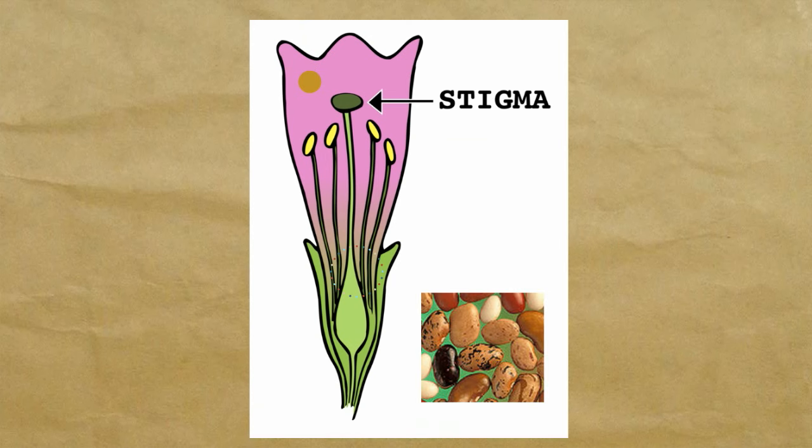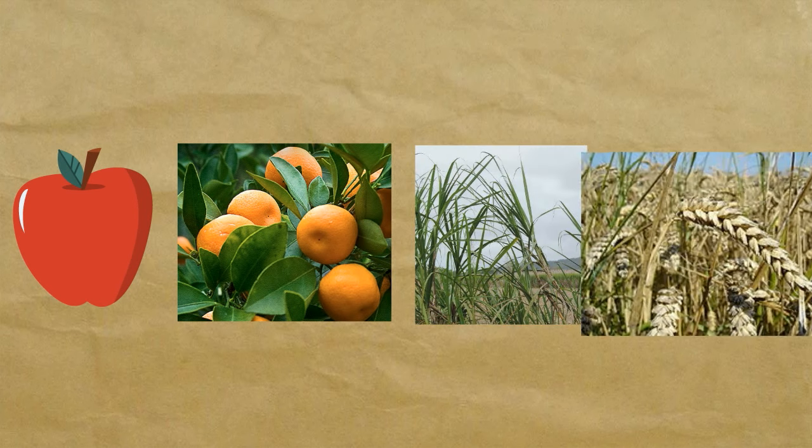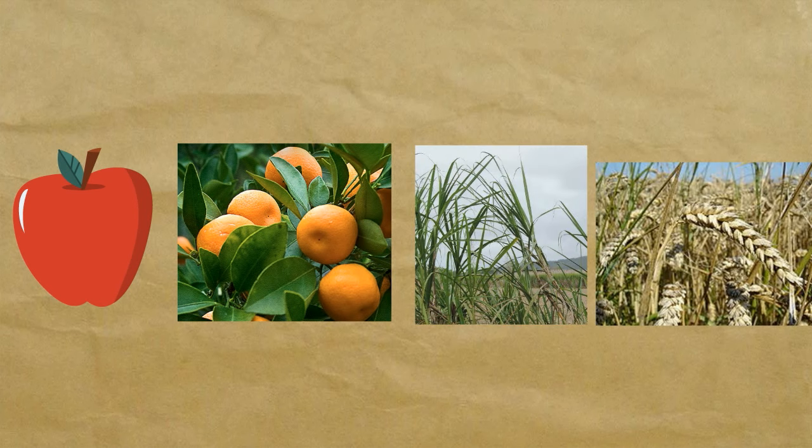Some common Angiosperms are all plants with fruit like apples, oranges, and several grasses like sugarcane and wheat, and all flowering plants.